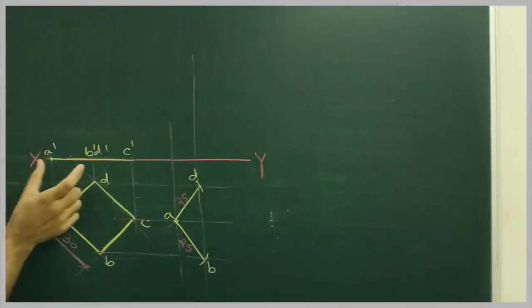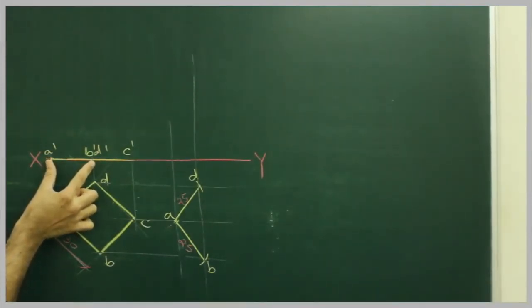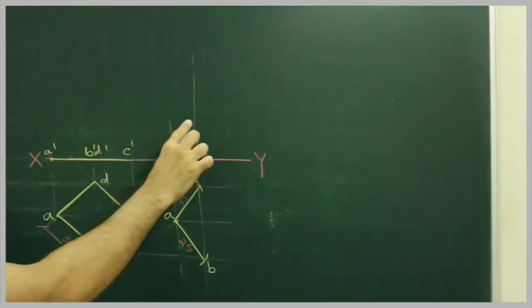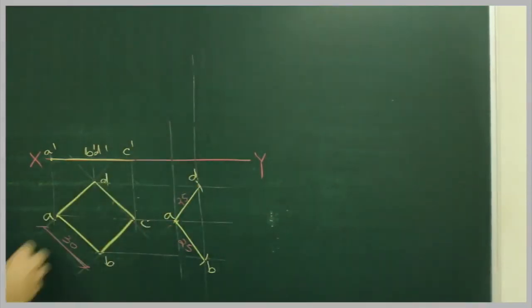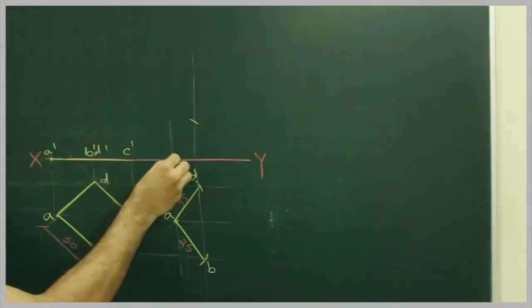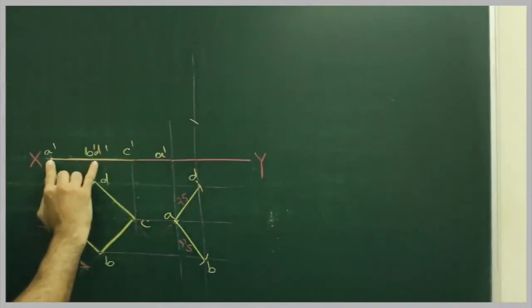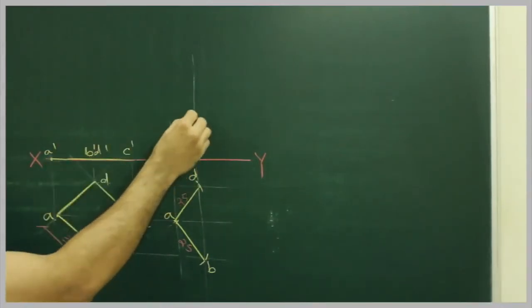Then I will do A dash to B D dash. See this A dash to B dash D dash. I will take this in my compass and from here I will cut it on this. So I will take this length and from here I will cut on this.